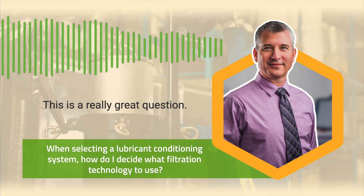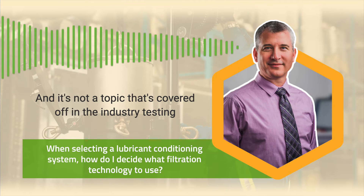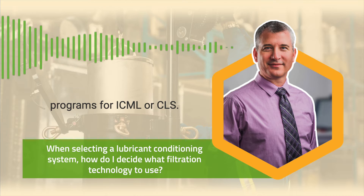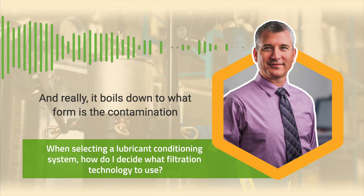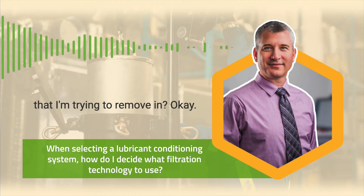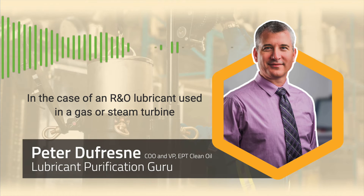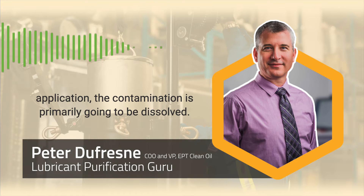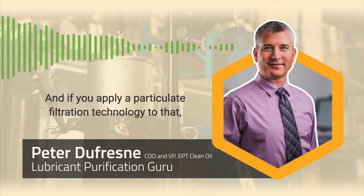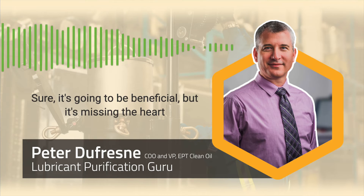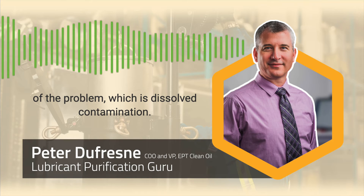This is a really great question, and it's not a topic that's covered in the industry testing programs for ICML or CLS. It really boils down to what form the contamination I'm trying to remove is in. In the case of an R&O lubricant used in a gas or steam turbine application, the contamination is primarily going to be dissolved. If you apply a particulate filtration technology to that, it's a mismatch — it may be beneficial, but it's missing the heart of the problem, which is dissolved contamination.